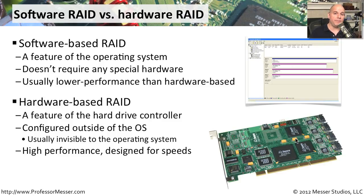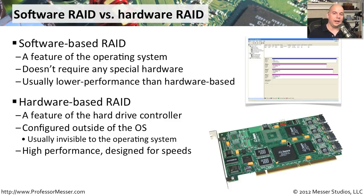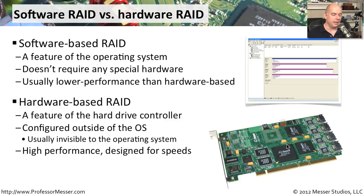When you boot your computer, you have the option to configure the BIOS of your RAID controller. That RAID controller then handles everything associated with striping, mirroring, or however you've set up your RAID configuration. Your operating system doesn't see any of this — it simply uses whatever disks the RAID controller allows it to see.